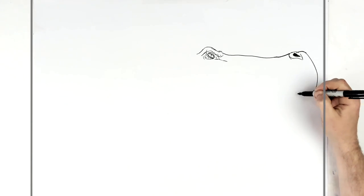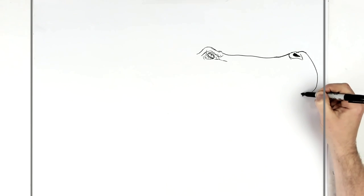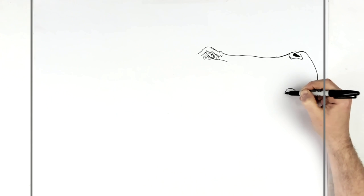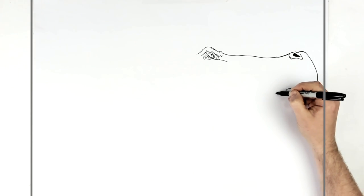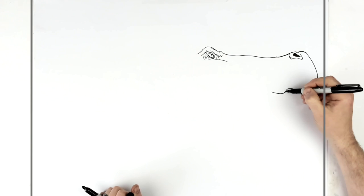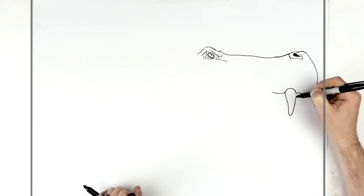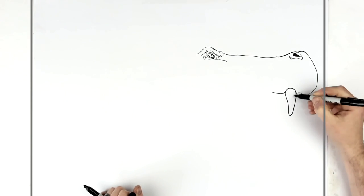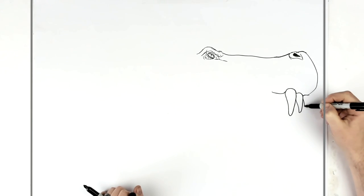His teeth are down here, and they kind of just grow out from his lips. We'll just bump around various sections — he's got like three at the front. And then there's a gap, so we'll add them one by one. We'll go big tooth here, another one here, and then another one here.